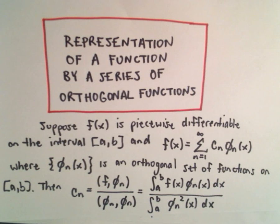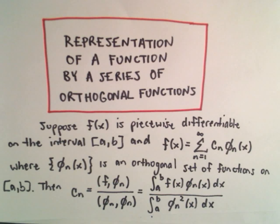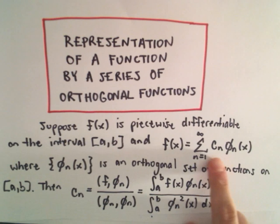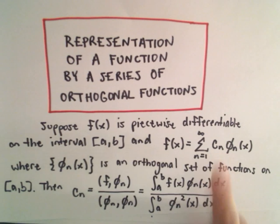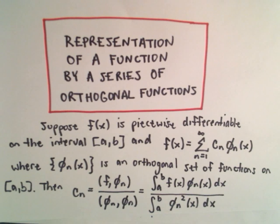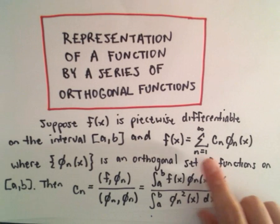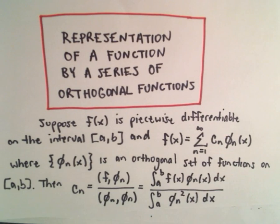Here we're going to talk about representation of a function by a series of orthogonal functions. Mainly what we're doing is we want to find a formula for the coefficients — our c sub n's — in terms of f of x and our orthogonal functions. We have this series expansion and we want to somehow get a formula for our coefficients.